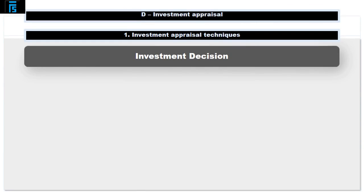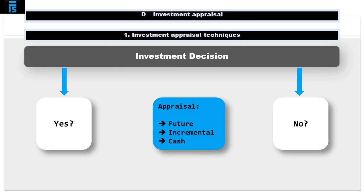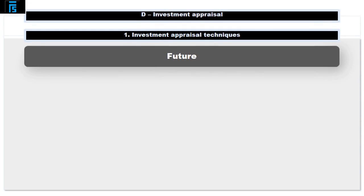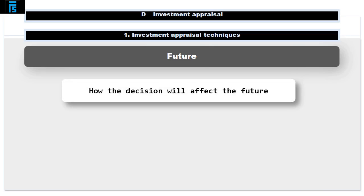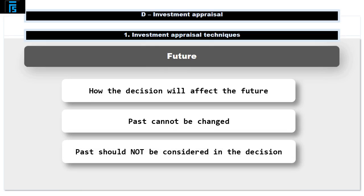When we're making a decision about whether or not to invest, the amount to include in the appraisal should be future incremental cash. The reason for this is as follows. Firstly, let's consider the significance of the word 'future.' When we're making decisions, we're concerned about how that decision will affect the future. Anything that happened in the past cannot be changed, so should not be considered further in the decision itself.